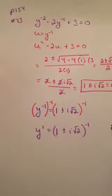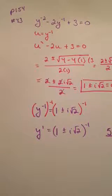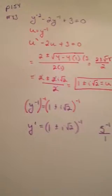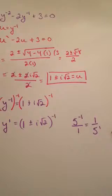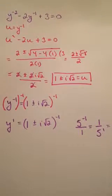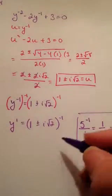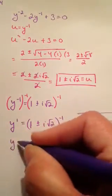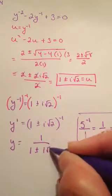Recall your rules with exponents: if I have 5 to the negative 1 power, you make that into a fraction and move it down to make it positive. So 5 to the negative 1 becomes 1 over 5 to the 1st power, or just 1 over 5. We're going to apply the same rule over here.